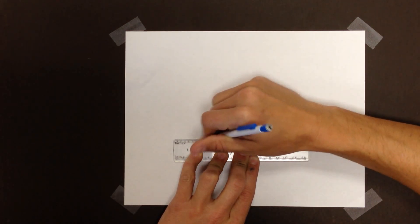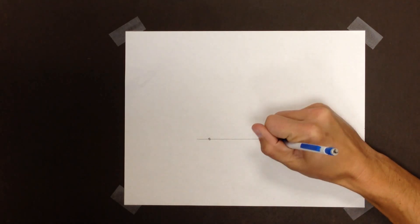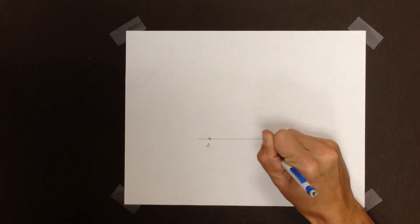Actually, let's do this. Let's make a straight line and pick two points. We'll call that one A and we'll call that one B.